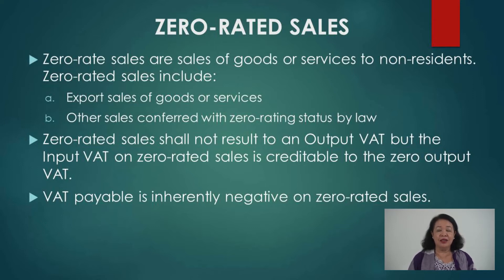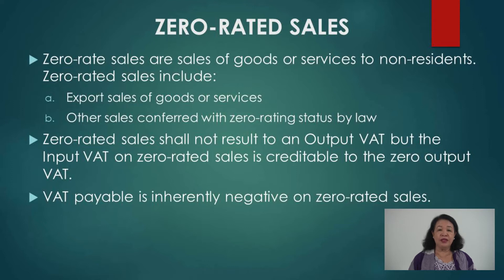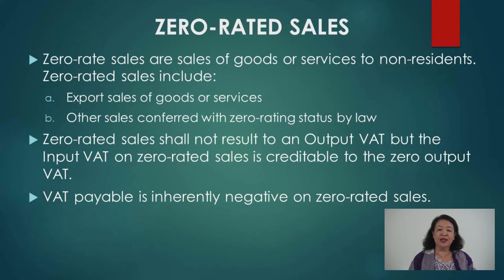In zero-rated sales, you are a VAT-registered person but you have no output tax — the 12% VAT rate on your sale is zero. However, if a transaction qualifies as zero-rated, you have no output tax but you do have input tax. That is the key difference of a zero-rated sale from an exempt sale: for a zero-rated sale there is input but no output, while for an exempt sale there is no output and also no input.